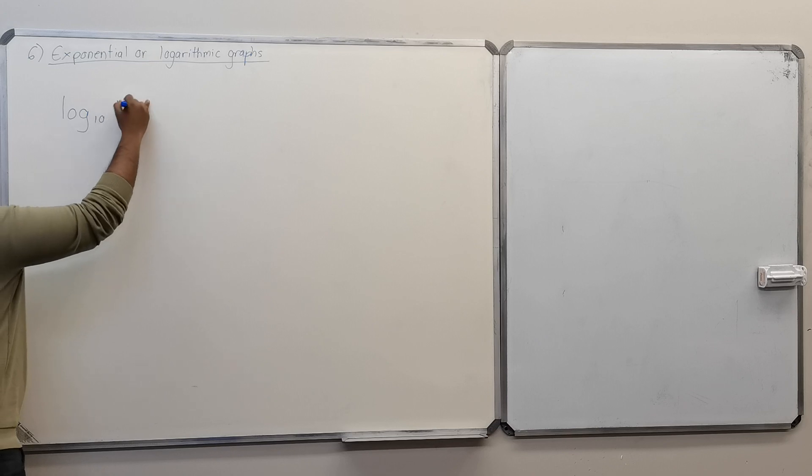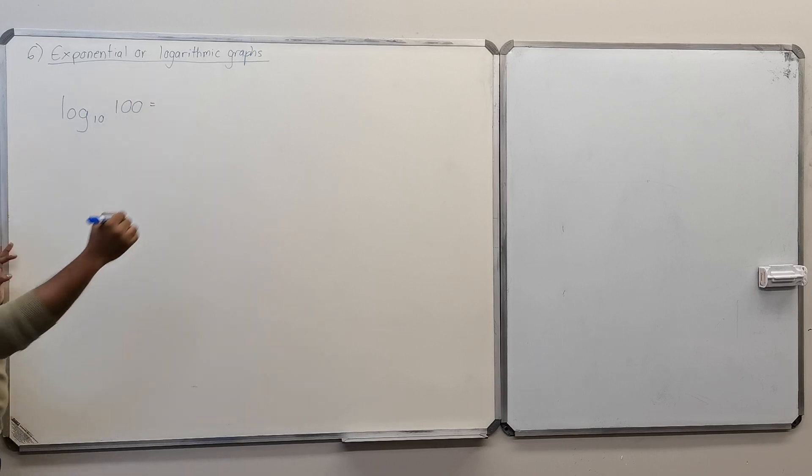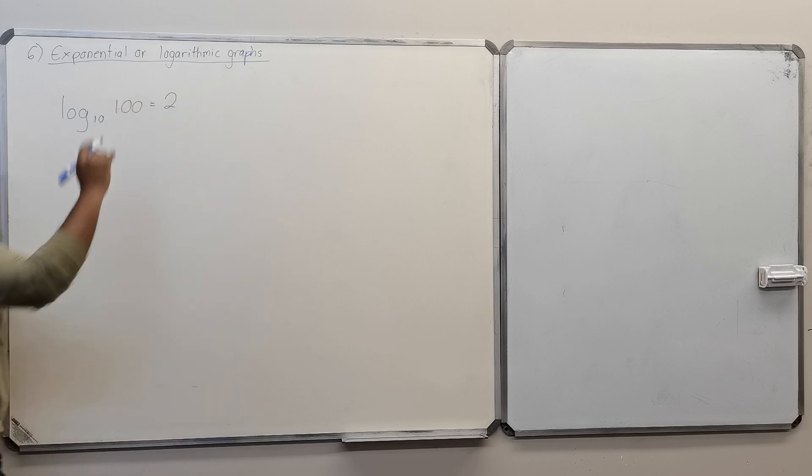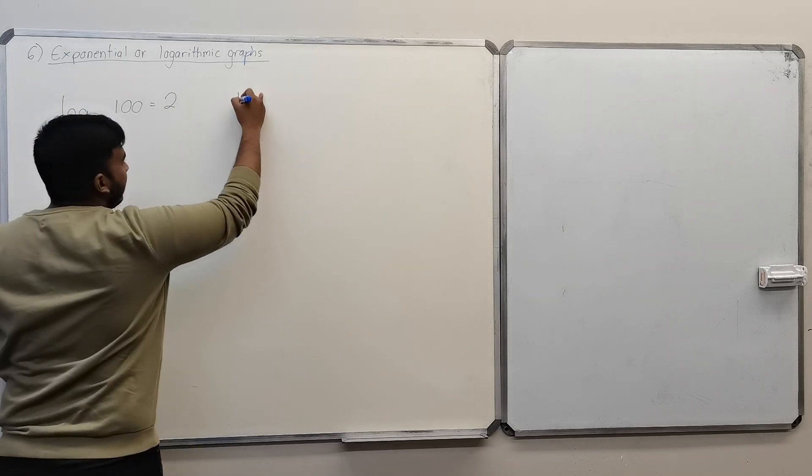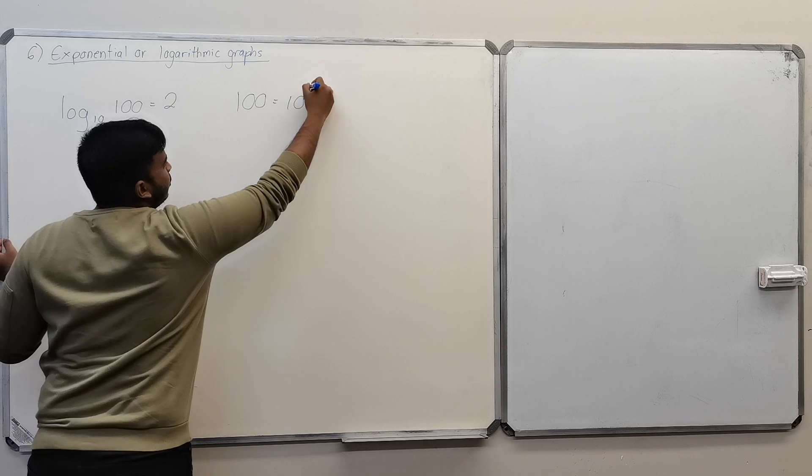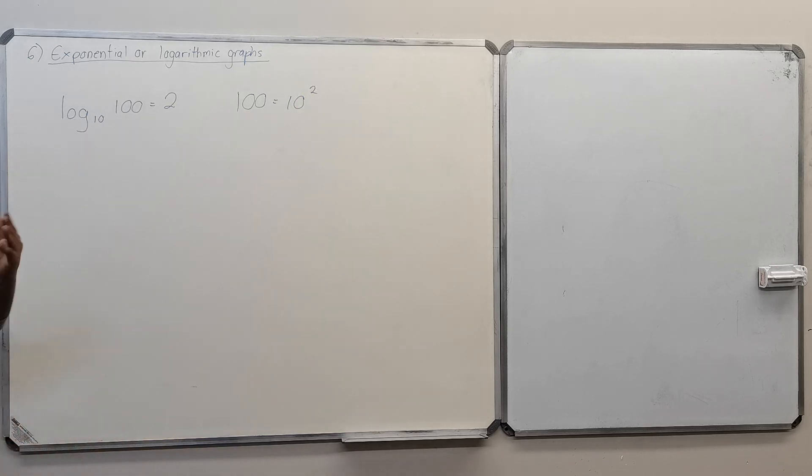Say for example you have log₁₀(100) = 2 and you want to change to an exponential form. Now exponential form has an exponent. The exponential form is going to be 100 = 10². And how do they get this?